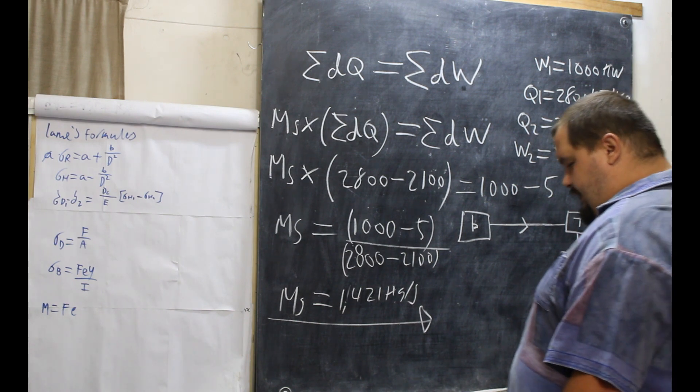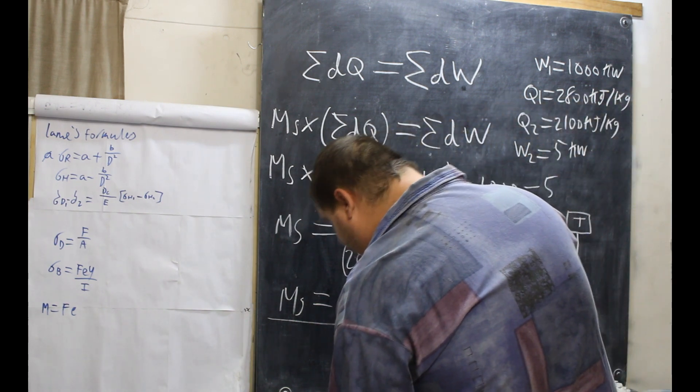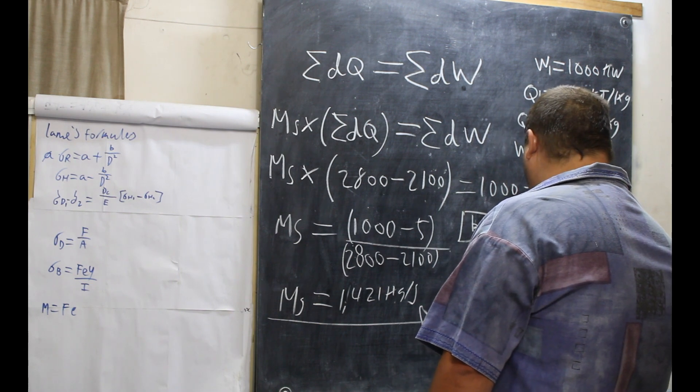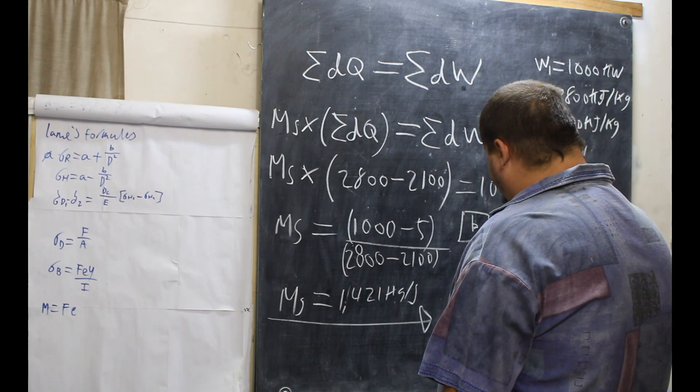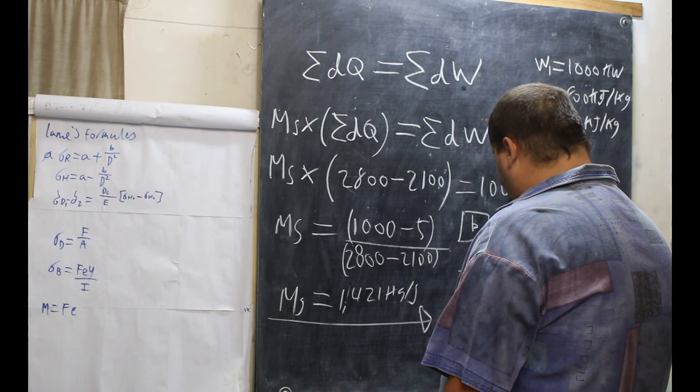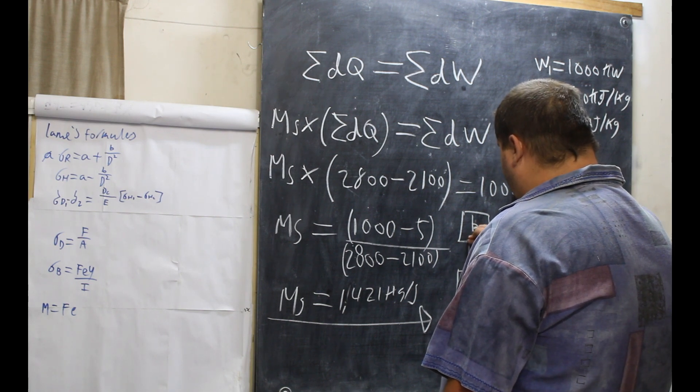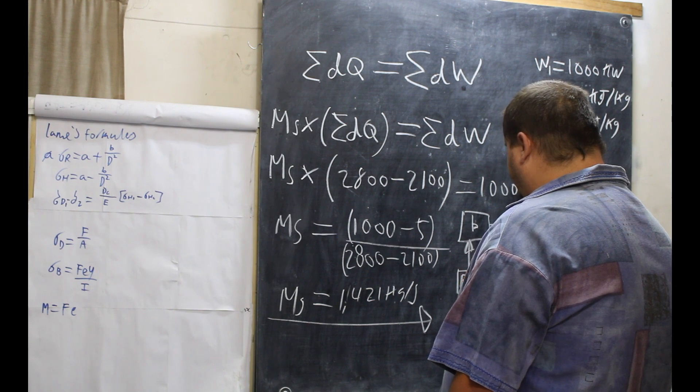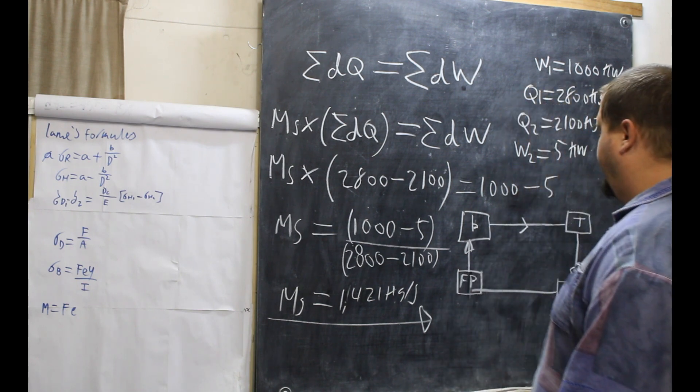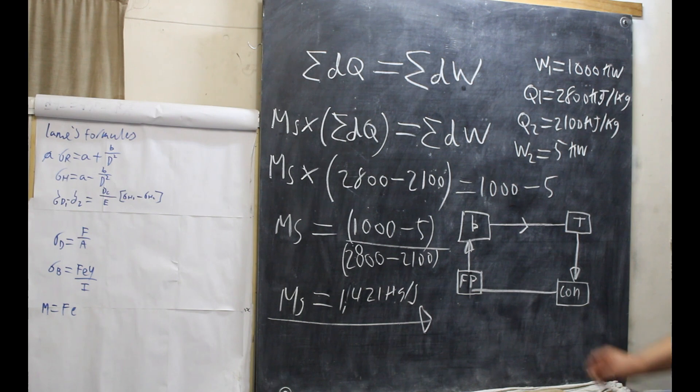After it comes down to the condenser, it goes via feed pump. After the condenser, it goes to the feed pump. And then, from the feed pump, it goes to the boiler.